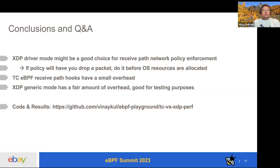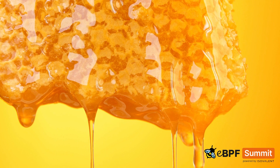In conclusion, XDP driver mode is a good choice for the receive path for network policy enforcement, since if you're going to drop a packet, you want to do it before OS resources are allocated. TC eBPF receive paths have a small overhead. XDP generic mode has more overhead but has its uses — it's good for testing purposes. We have shared the code and results from this test on GitHub. Please take a look. Thank you, and we'll be around for Q&A in the Slack channels.